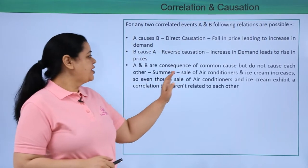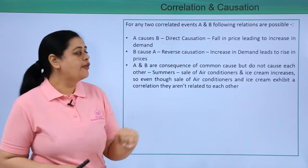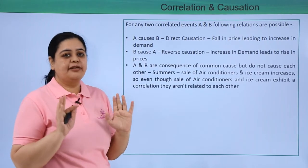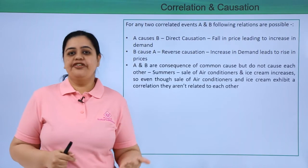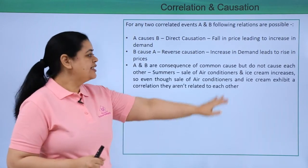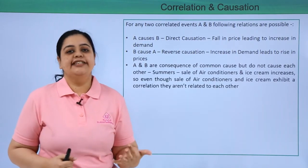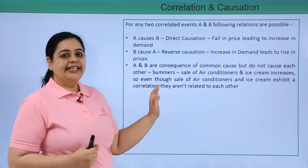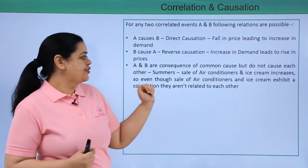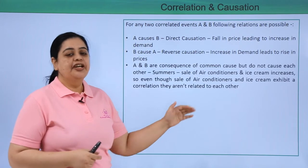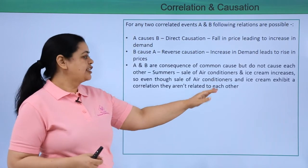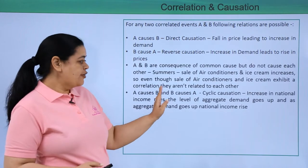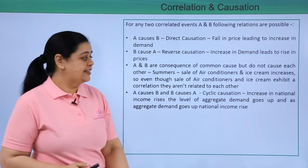Next, A and B are consequences of a common cause but they do not cause each other. For example, in summers we would see the sale of air conditioners rising, and simultaneously ice cream sales also increasing. Even though the sale of air conditioners and ice creams exhibit a correlation, they actually aren't related to each other.